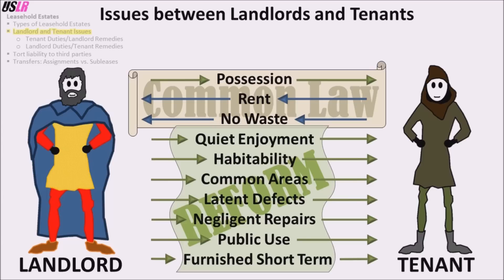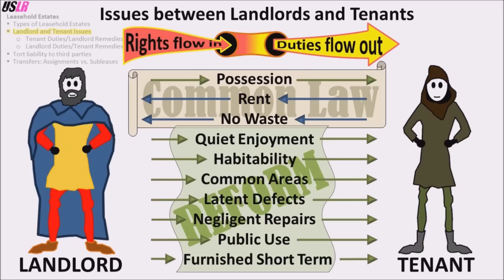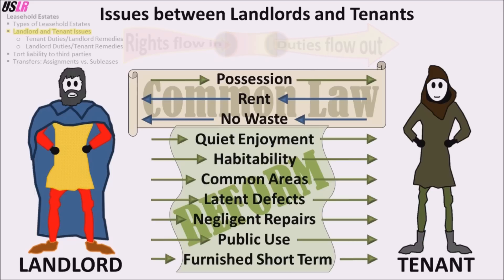The law uses many legal terms such as rights, duties, remedies, covenants, and warranties. It may be easier to think of issues as follows: rights flow in and duties flow out of the issues. For example, for the issue of possession, the landlord has the duty to deliver possession and the tenant has the right to possession. For the issue of paying rent, the tenant has the duty to pay rent and the landlord has the right to receive payment. From this list it is easy to see that most of the duties fall on the landlord.